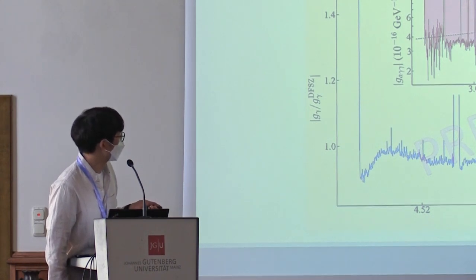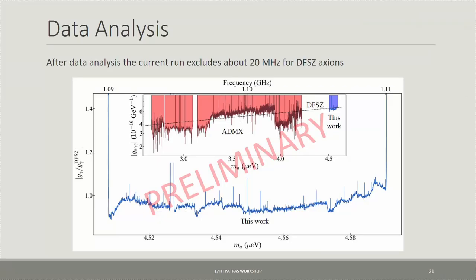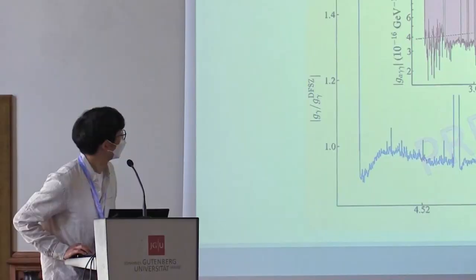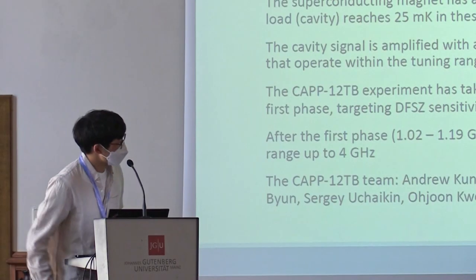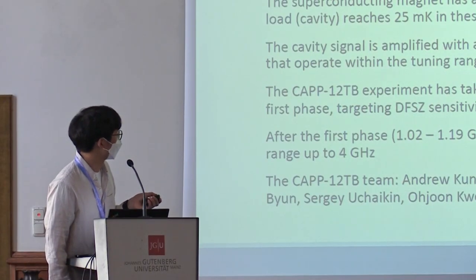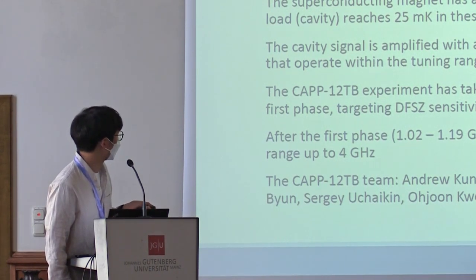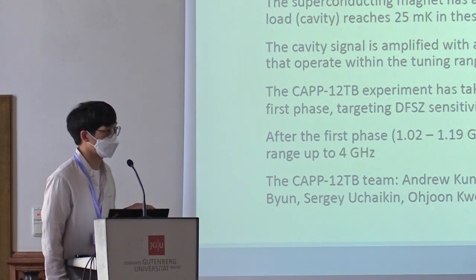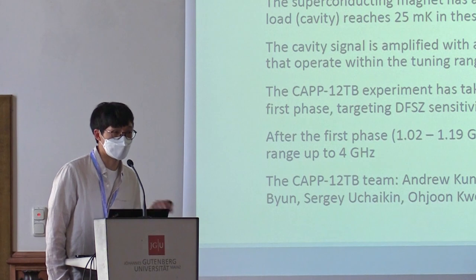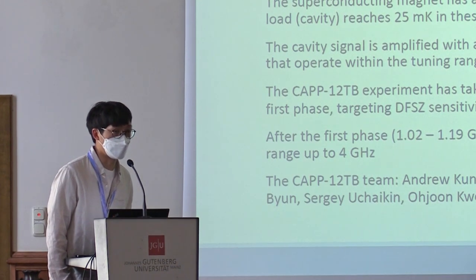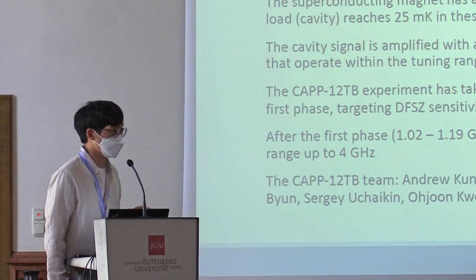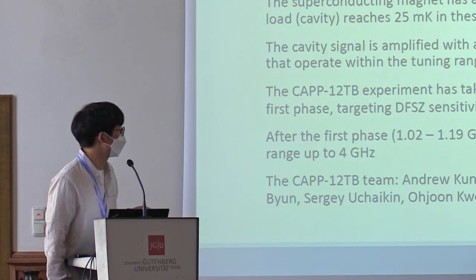Preliminary results show the exclusion limits achieved by this work. Comparing to the ADMX experiment, which is currently the other experiment with DFSZ axion sensitivity, we can see where we stand. All components are working together, data has been taken, and we plan to extend the frequency range up to about 4 GHz with a much faster scan rate than currently achieved, which is already an impressive rate.